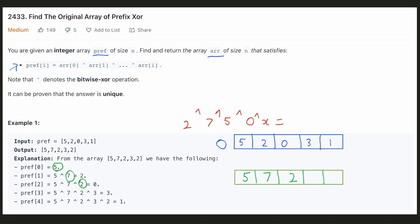And now we have to find a number such that 2 xor 7 xor 5 xor that number is equal to 3. And 3 satisfies this condition.